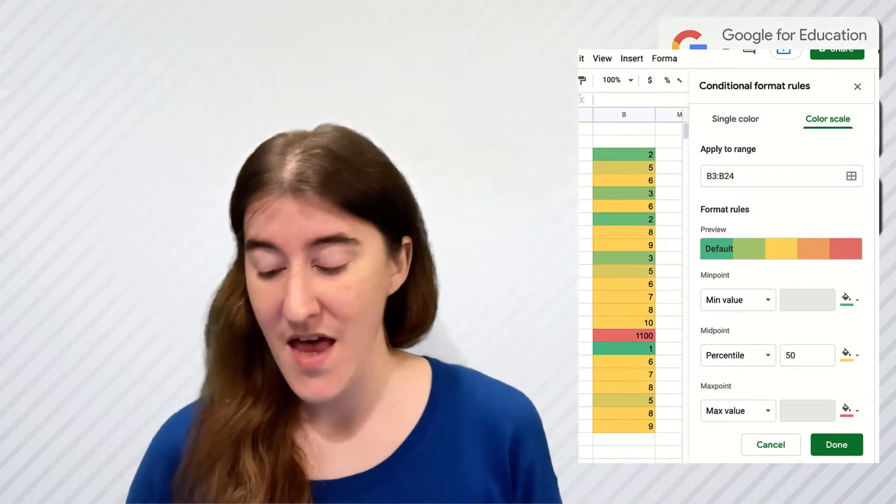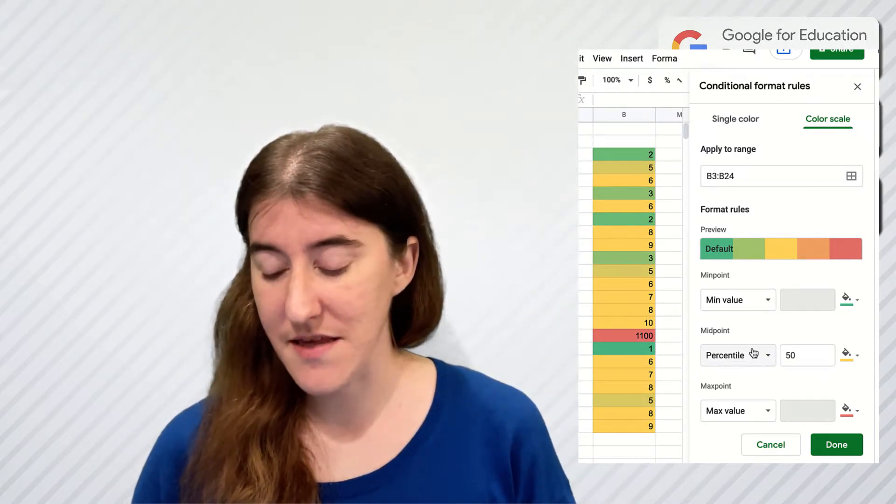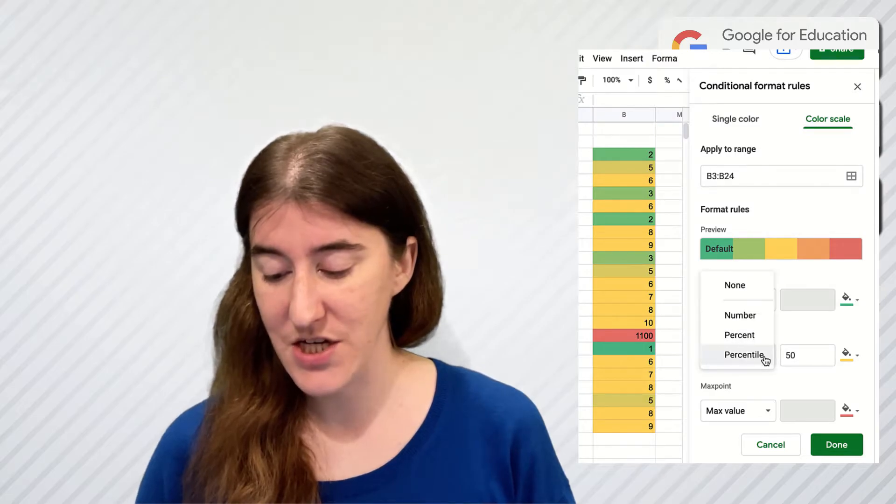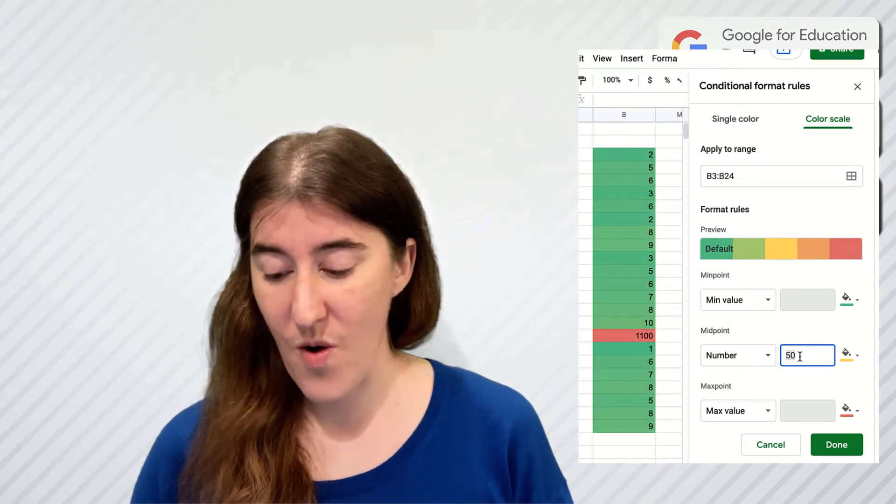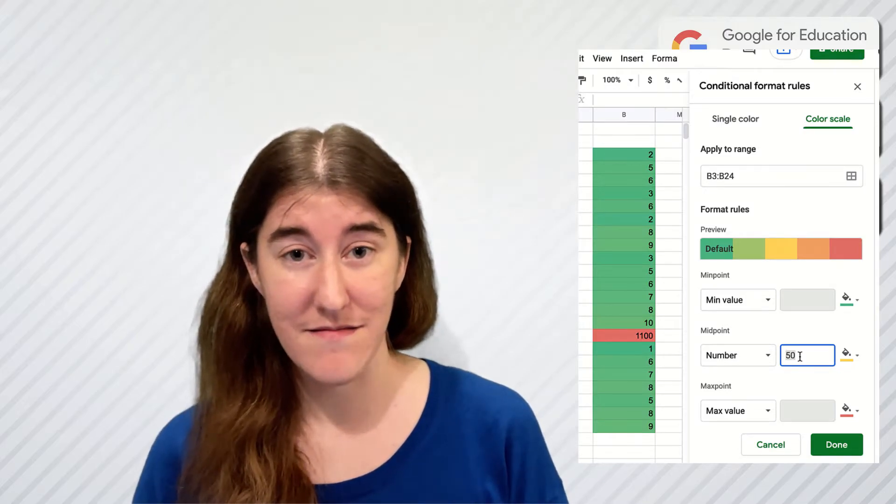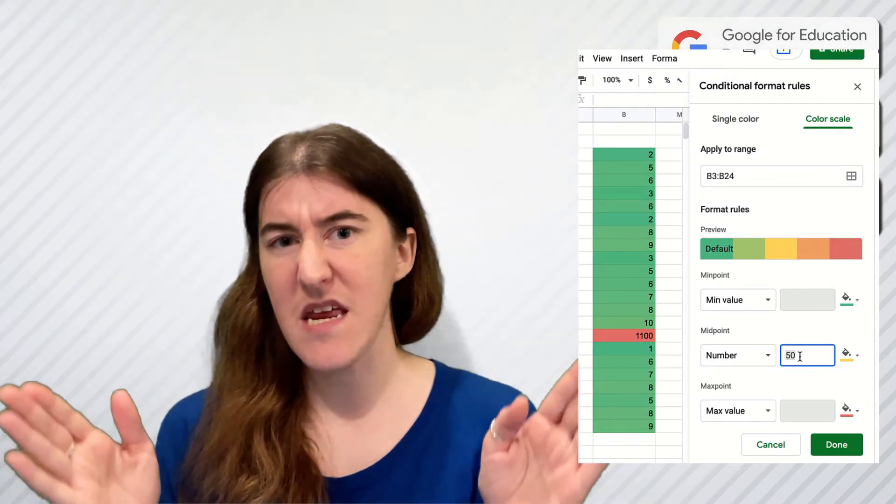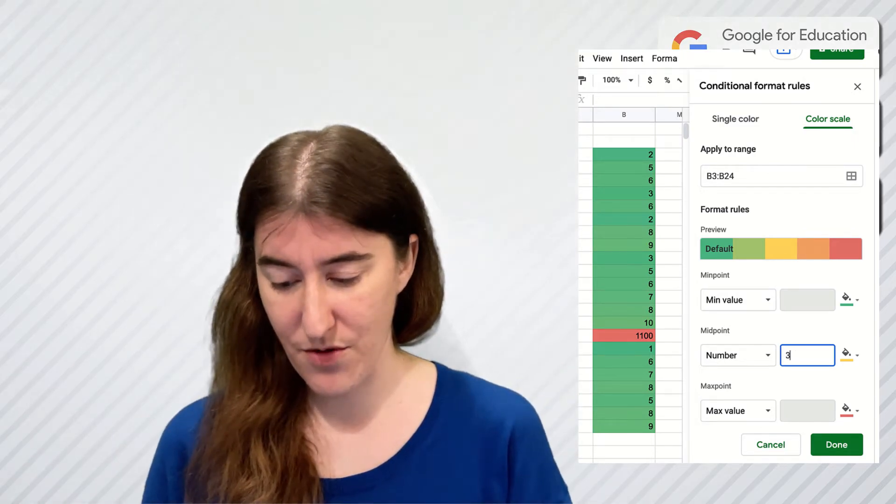But if I come over here to the midpoint option and I change it from percentile to number, and I say I want that midpoint where I'm saying the median of my numbers are to be the number three.